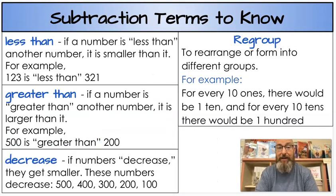Next, and here's a lot of terms, again I want to go over all of them. We have less than. If a number is less than another number, it's smaller than that. For example, 123 is less than 321. Then we have the term greater than. If a number is greater than another number, it's larger, it's bigger than that number. For example, 500 is greater than 200. Then we have the word decrease. If numbers decrease, they get smaller. These numbers decrease: 500, 400, 300, 200, 100. They get smaller as you go. When you subtract, numbers decrease. They get smaller.